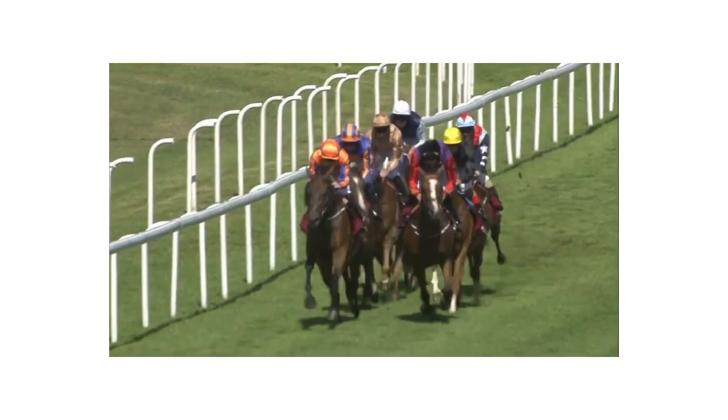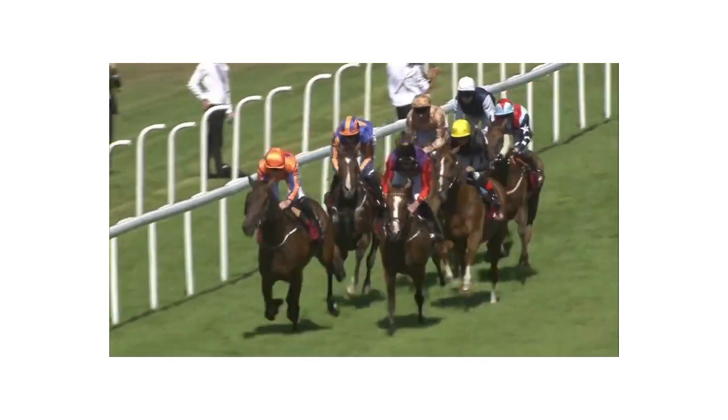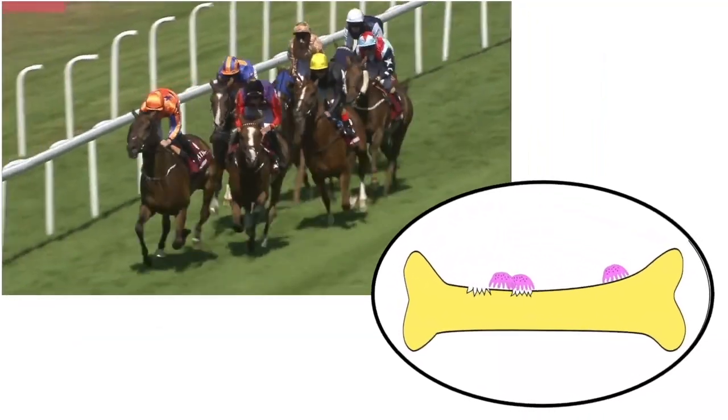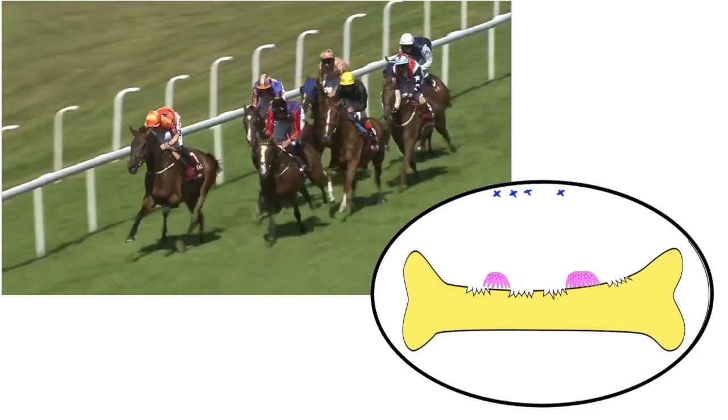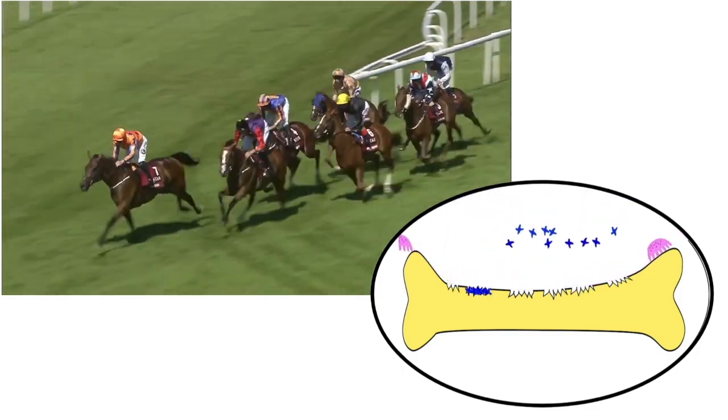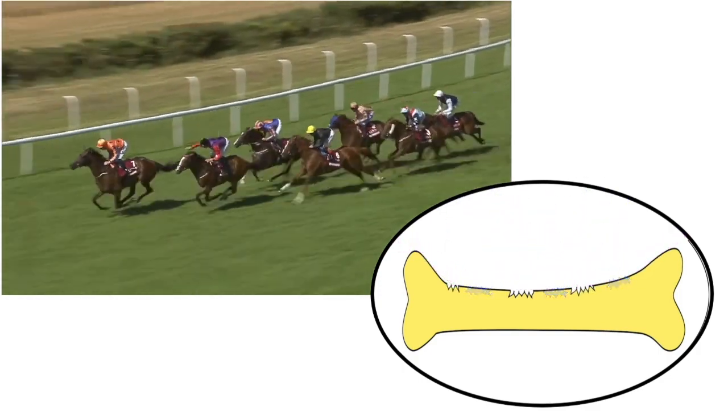In case of racehorses, the landing on bones can be so strenuous and repetitive that bone cells won't have enough time to properly repair the bone tissue. The result is maladaptation which leads to an increase in bone's propensity for fracture.